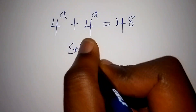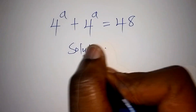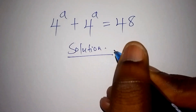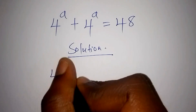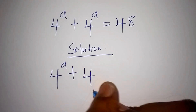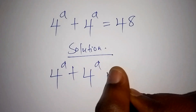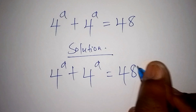So on our solution, this is the maths problem that you are having. We have 4 to the power of a, plus 4 to the power of a, is equals to 48.